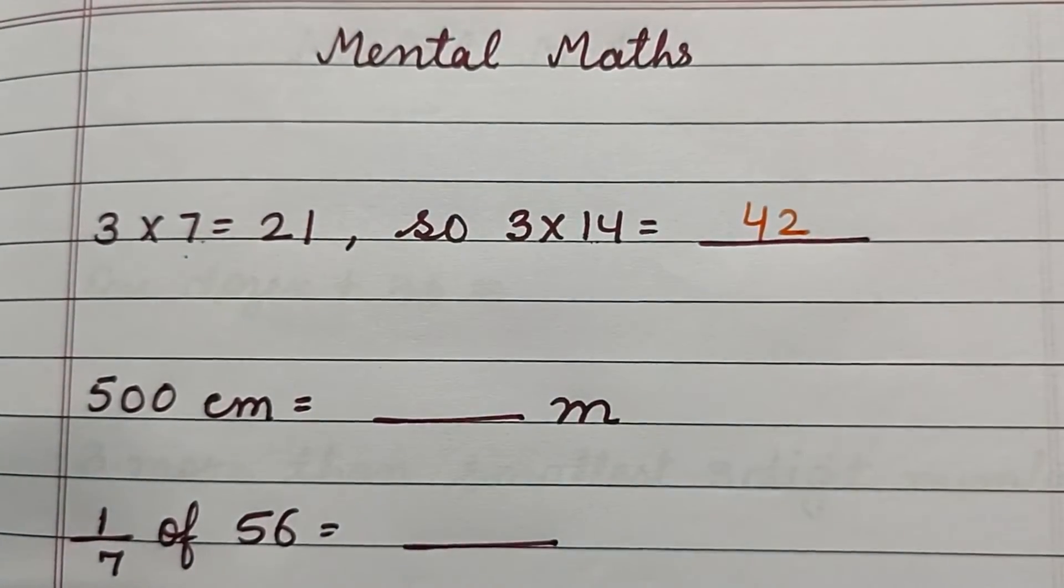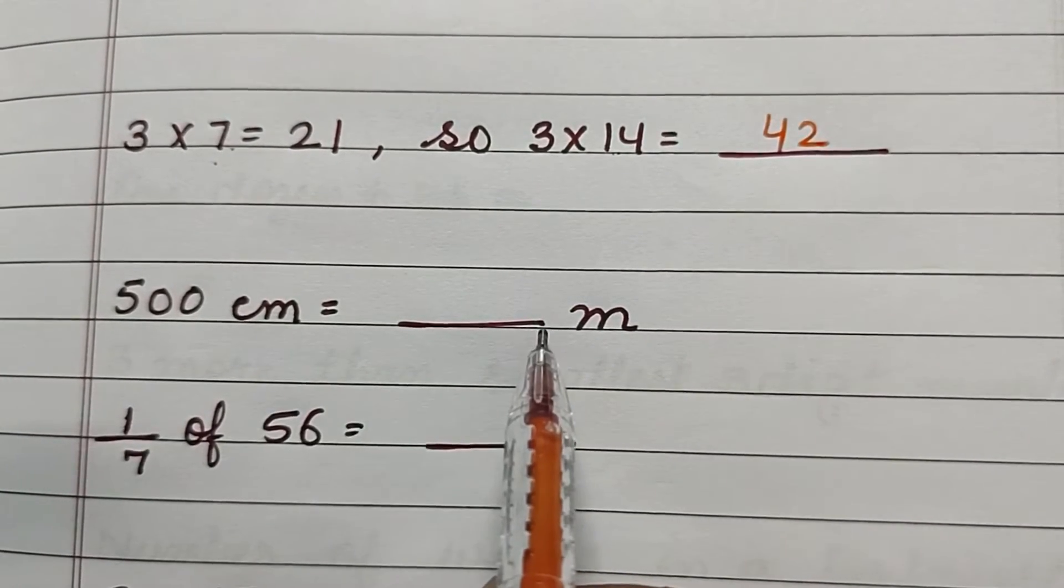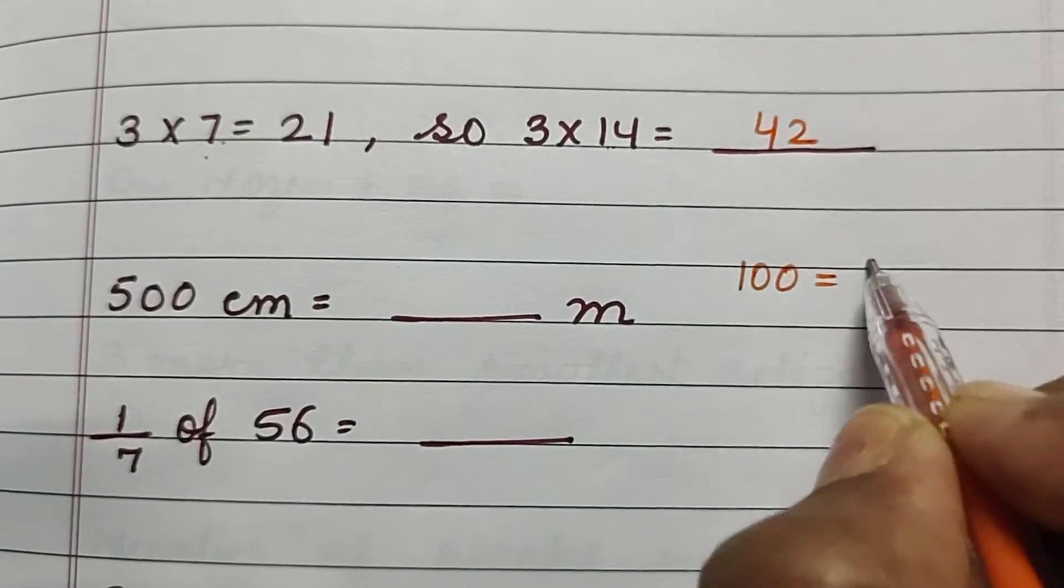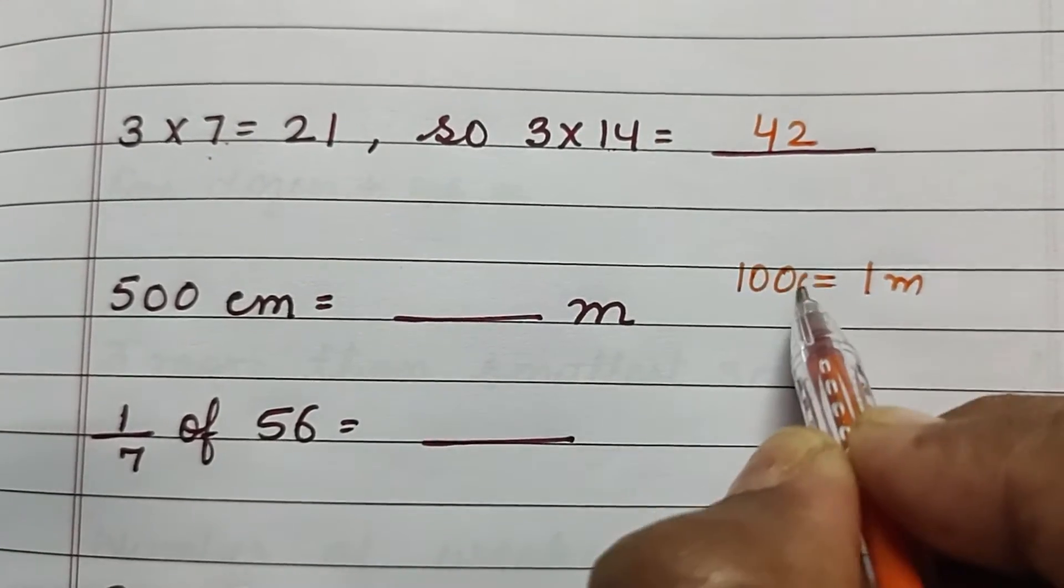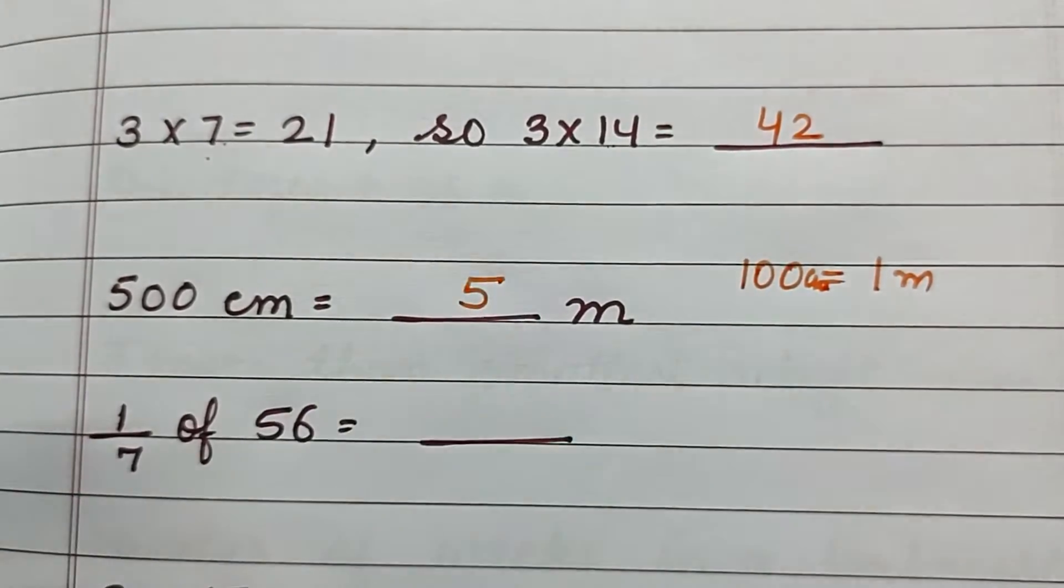500 centimeters is equal to how many meters? We all know that 100 centimeters is equal to 1 meter, so 500 centimeters is equal to 5 meters.